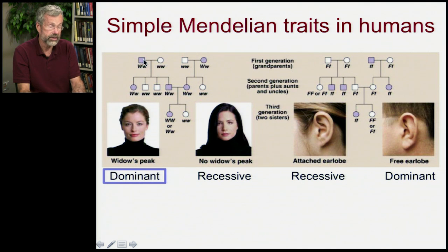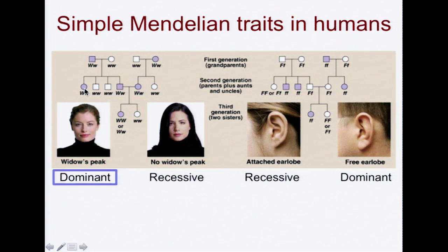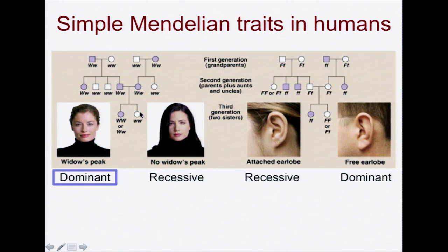So a heterozygote will have a widow's peak. This set of grandparents — one had a widow's peak, the other didn't. Likewise, the other set of grandparents — one had a widow's peak and the other didn't. So the two families had children, some with widow's peak, some without. Then two of the parental generation who had widow's peaks had children, and one of them still has at least one copy of the capital W allele for the widow's peak, whereas the other was recessive and didn't have the widow's peak. We don't know if this individual is homozygous for that particular trait or heterozygous, because both of her parents had widow's peak — she might be either, and we won't know until she has a family of her own.